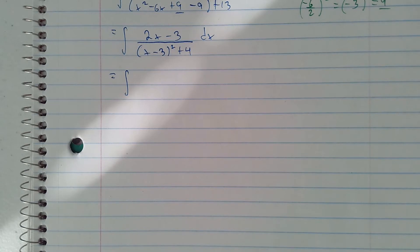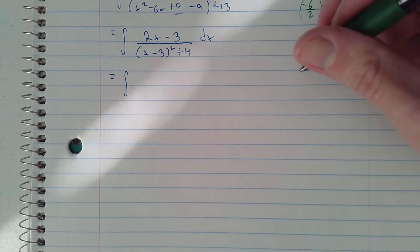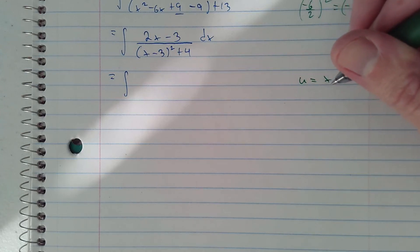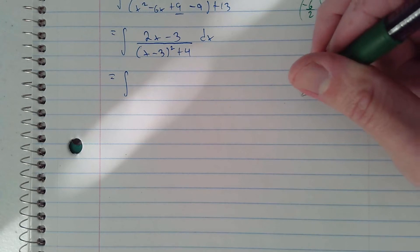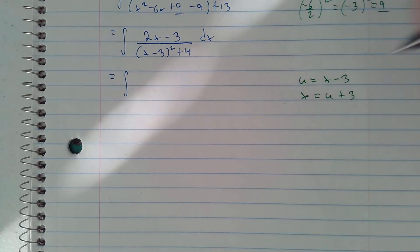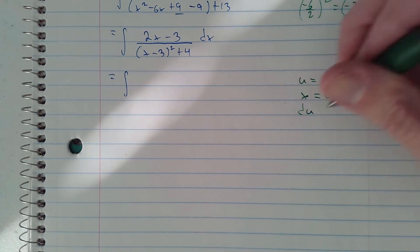Now we have u substitution. We'll let u equal x minus 3, and so if we solve for x that would be u plus 3. x equals u plus 3 and du is equal to dx.